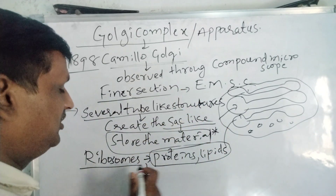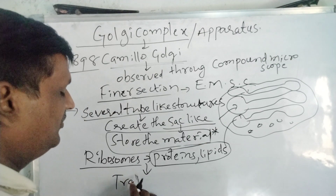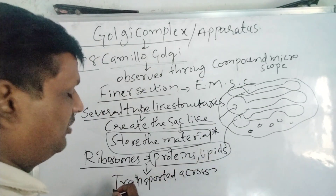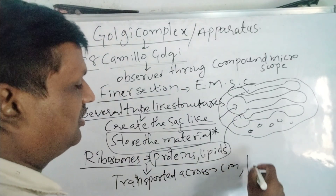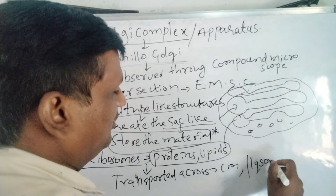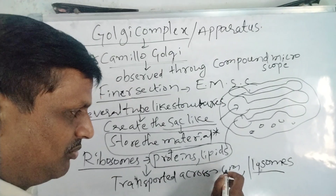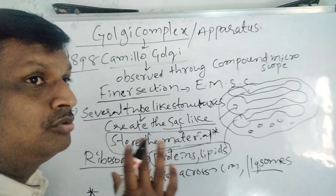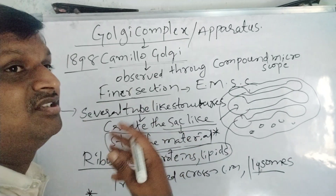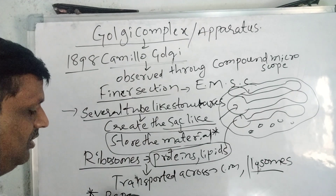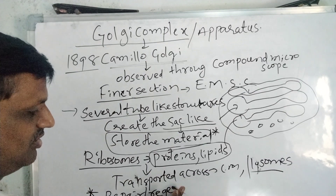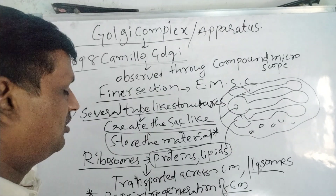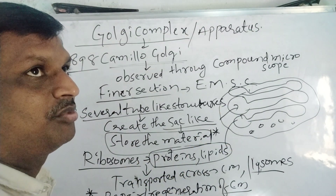These materials are then transported across the cell membrane. Very importantly, the Golgi complex is also used for the repair and regeneration of the cell membrane. Either repair or regeneration of the cell membrane occurs through the Golgi complex — this is a very important point to remember.